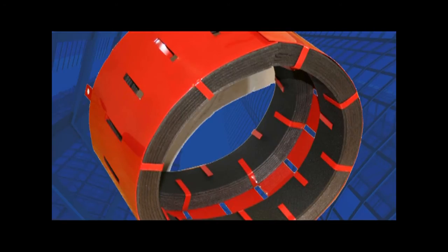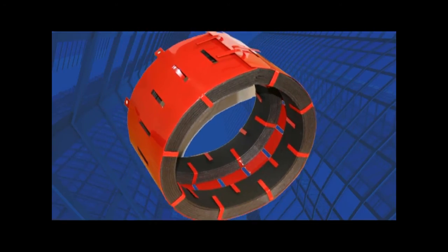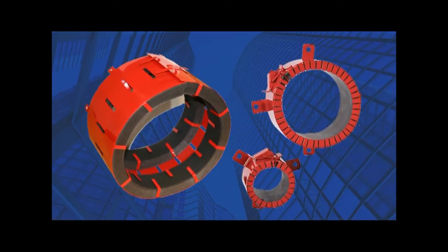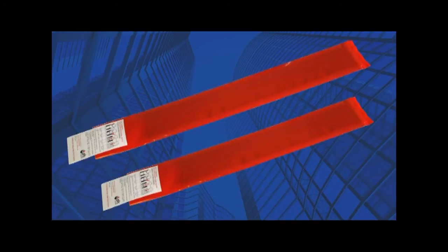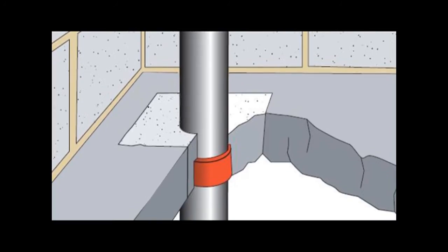Pipe collars incorporate a rigid outer casing which acts as a restraint for the intumescent material. Pipe wraps have no casing and must be located within the separating structure.